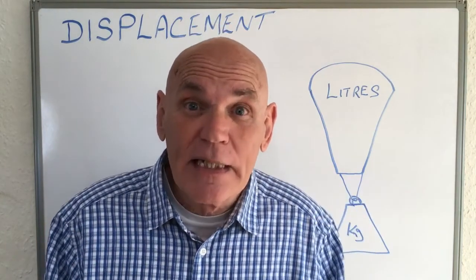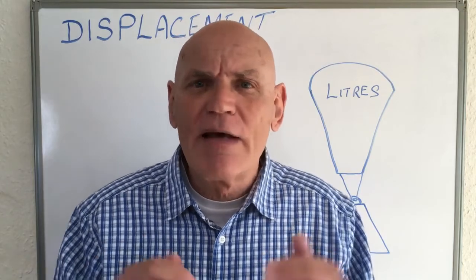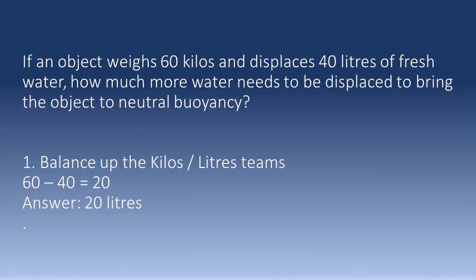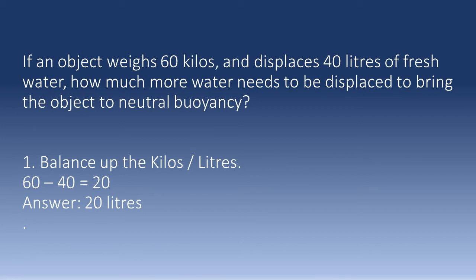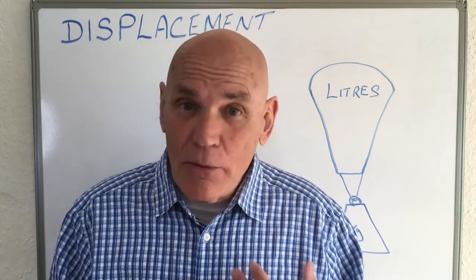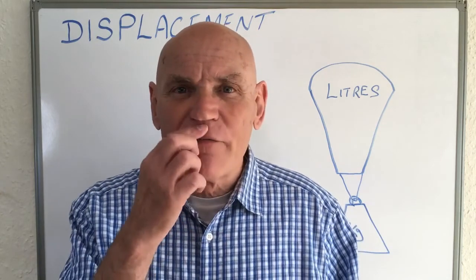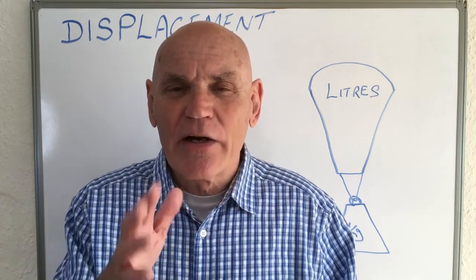One more question to show off a little. This one is in fresh water - level playing field. If an object weighs 60 kilos and displaces 40 liters of fresh water, how much more water needs to be displaced to bring the object to neutral buoyancy? Simply deduct the liters from the kilos: 60 minus 40 equals 20. There's your answer. Okay, that's it - I hope that's helped.